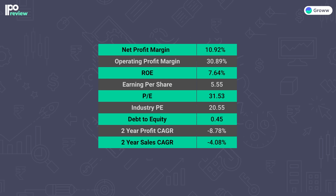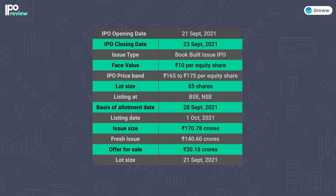The IPO opening date is 21 September 2021 and the closing date is 23 September 2021. The IPO price band is 165 to 175 rupees per equity share and the lot size is 85 shares. The IPO listing date is 1 October 2021. The total issue size is 170.78 crores, with a fresh issue of 140.6 crores and an offer for sale of 30.18 crores.